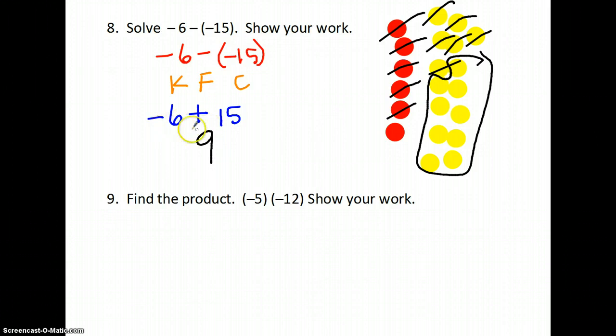You can also see that the signs are different. So I take the bigger number, subtract the smaller number, and keep the sign of the number with the larger absolute value, which is 15, and that's positive. So that's why it's a positive 9.